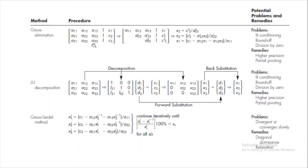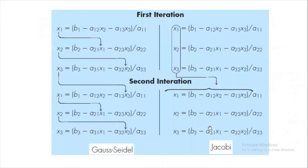There is a schematic slide showing the procedure, potential problems, and remedies — please read that slide in depth for the viva. Now let us talk about the Gauss-Seidel method versus the Gauss-Jacobi method. During this semester we will focus on Gauss-Seidel method.